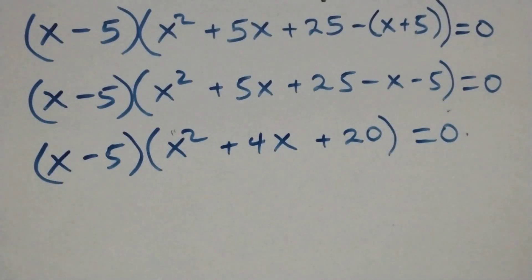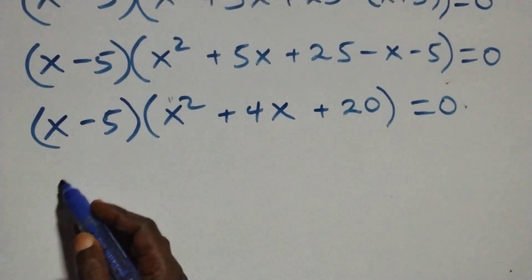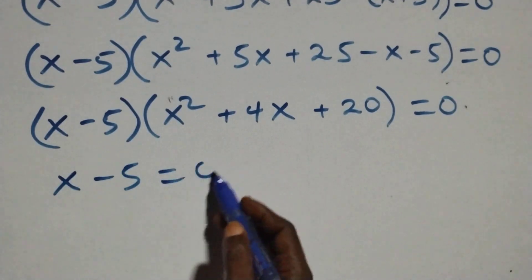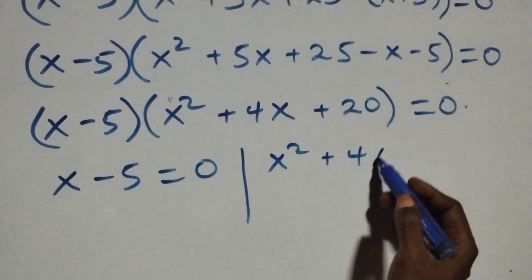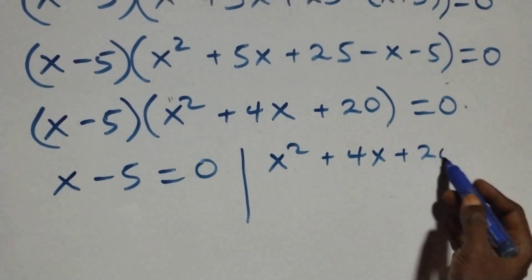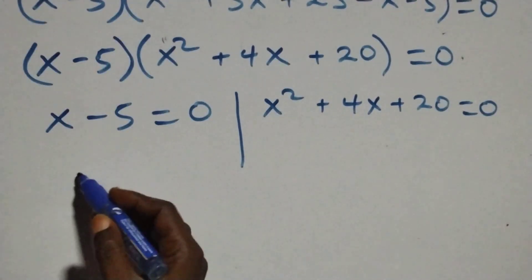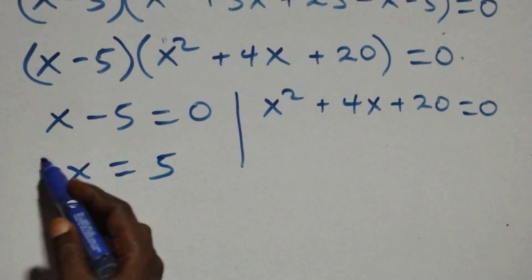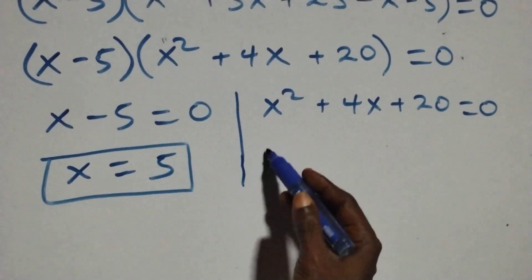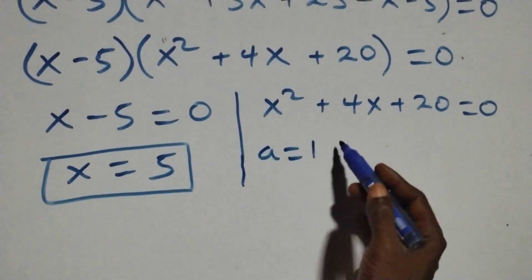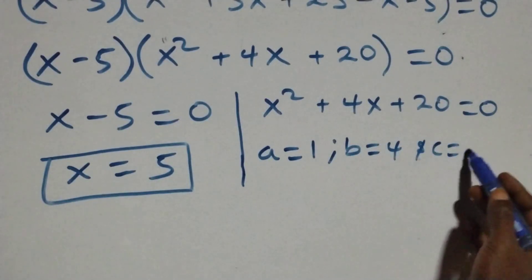Then here we have two possible cases. The first one: x minus 5 equals to 0, or we have x squared plus 4x plus 20 equals to 0 here. Solving on this side we have x equals to 5, which is a real solution here. And here we have a quadratic equation where a equals to 1, b equals to 4, and c equals to 20.